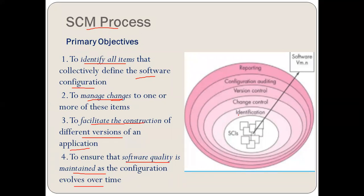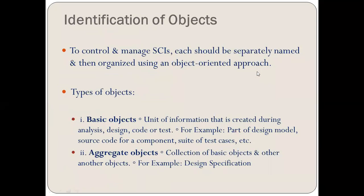Here you can see the evolving of software configuration management — these are the SCIs. SCIs can be computer programs, modules, single programs, documents, or anything. The first process is identification, then change control, version control, configuration auditing, and reporting. Moving further, talking about the first point — the identification of objects. Here we are going to control and manage the SCIs, which are software configuration items.